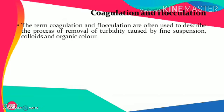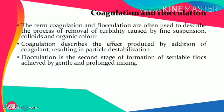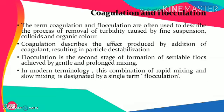Generally these fine suspensions or colloids are very difficult to settle under the normal process of sedimentation, so we need to coagulate and flocculate. Coagulation describes the effect produced by the addition of a coagulant, resulting in particle destabilization. A coagulant is a chemical used to achieve agglomeration of fine particles, helping to remove them by the process of sedimentation.